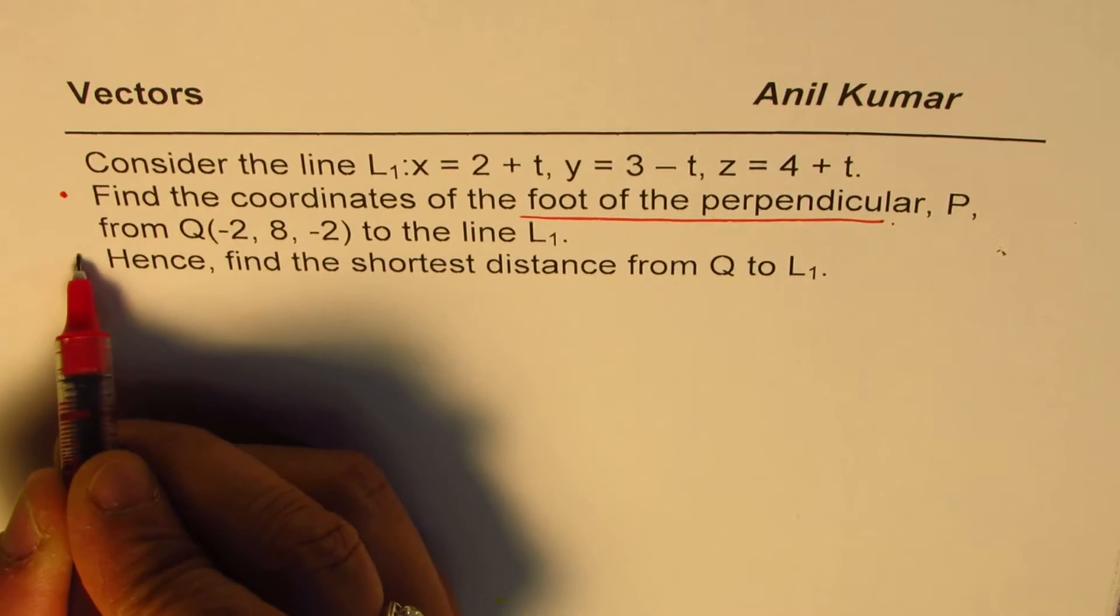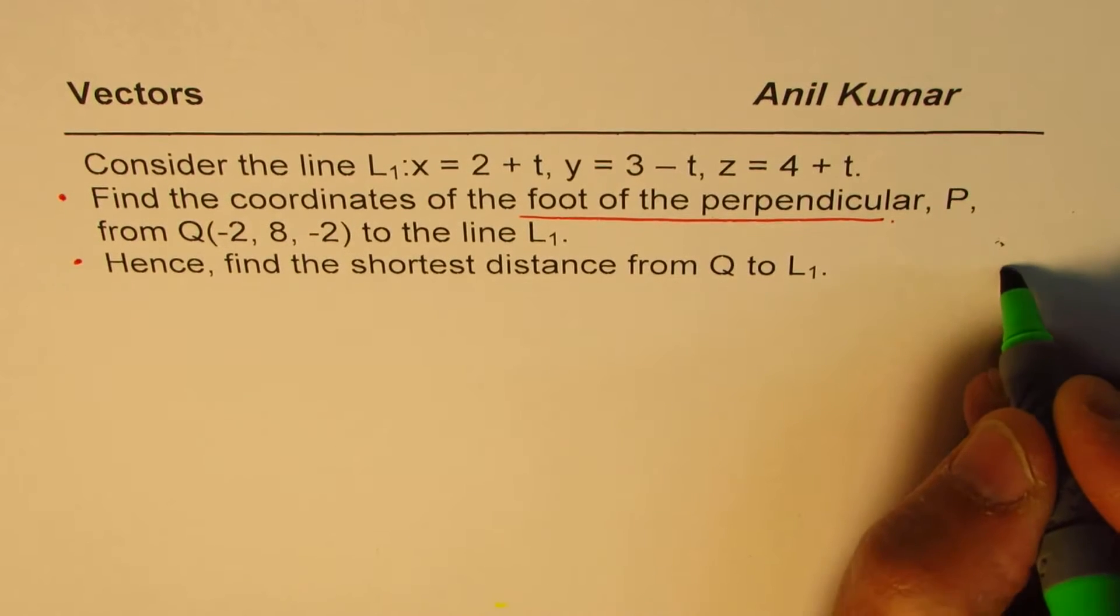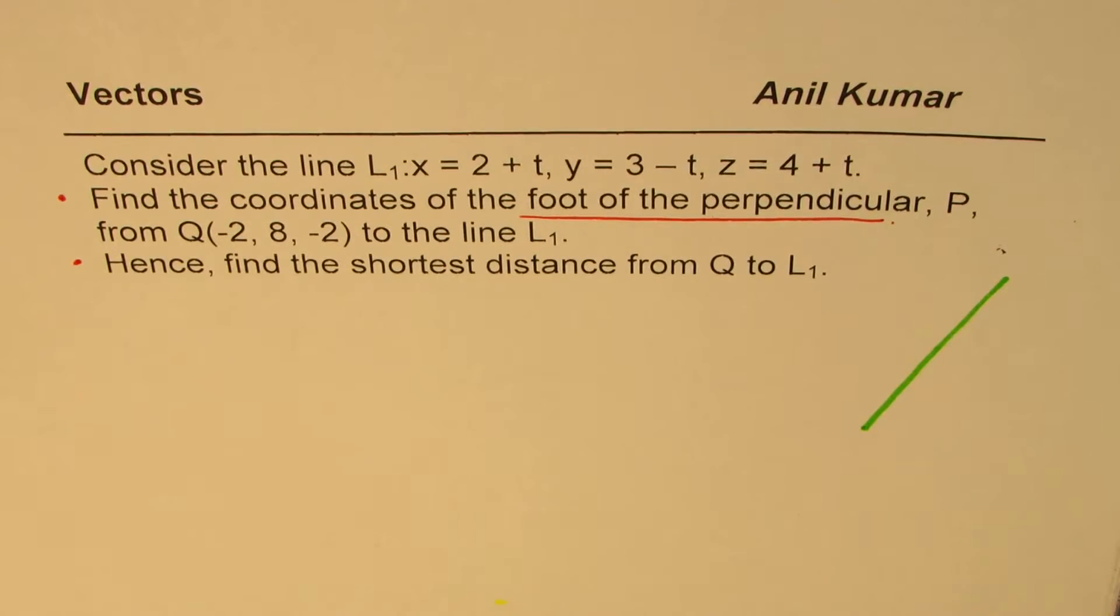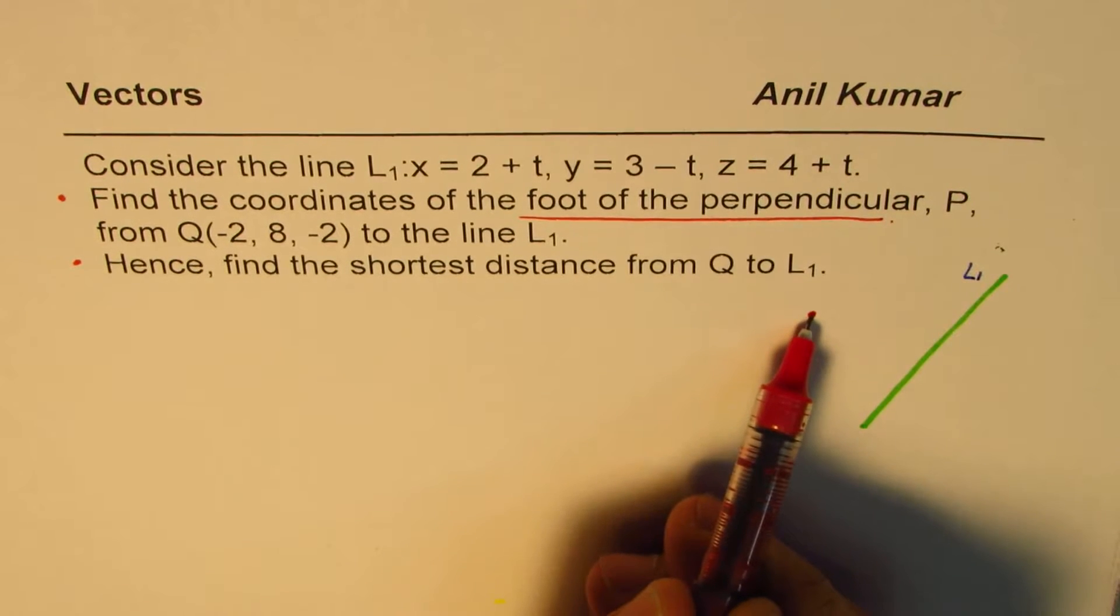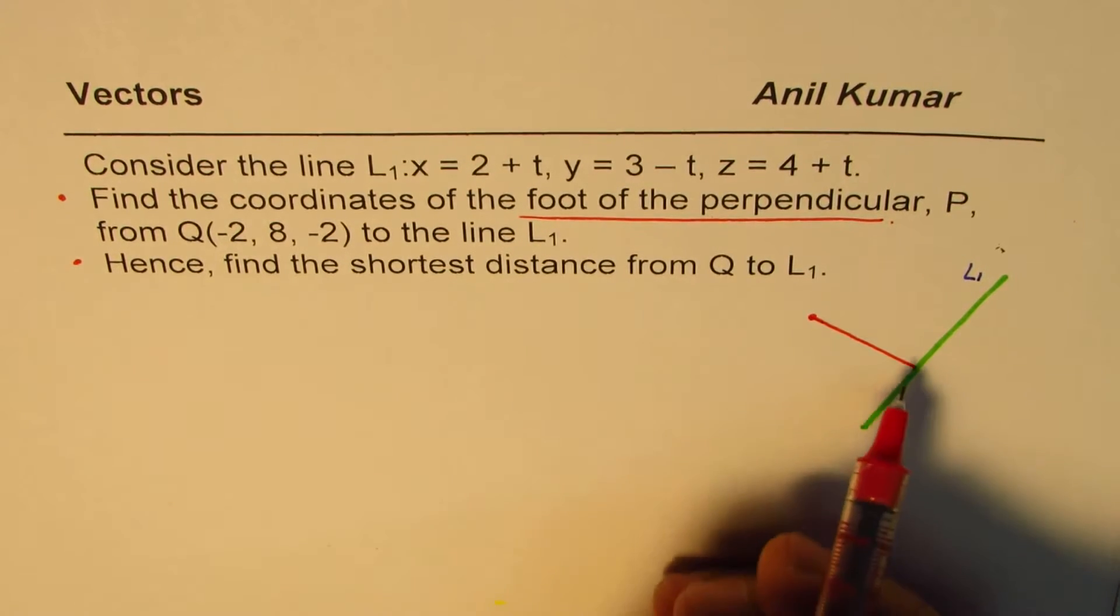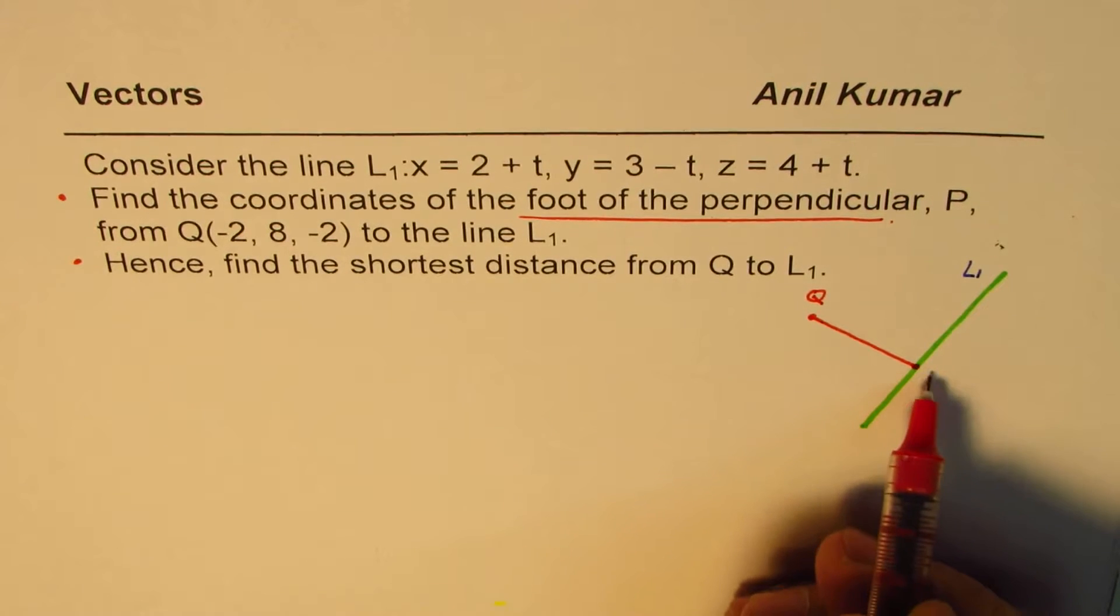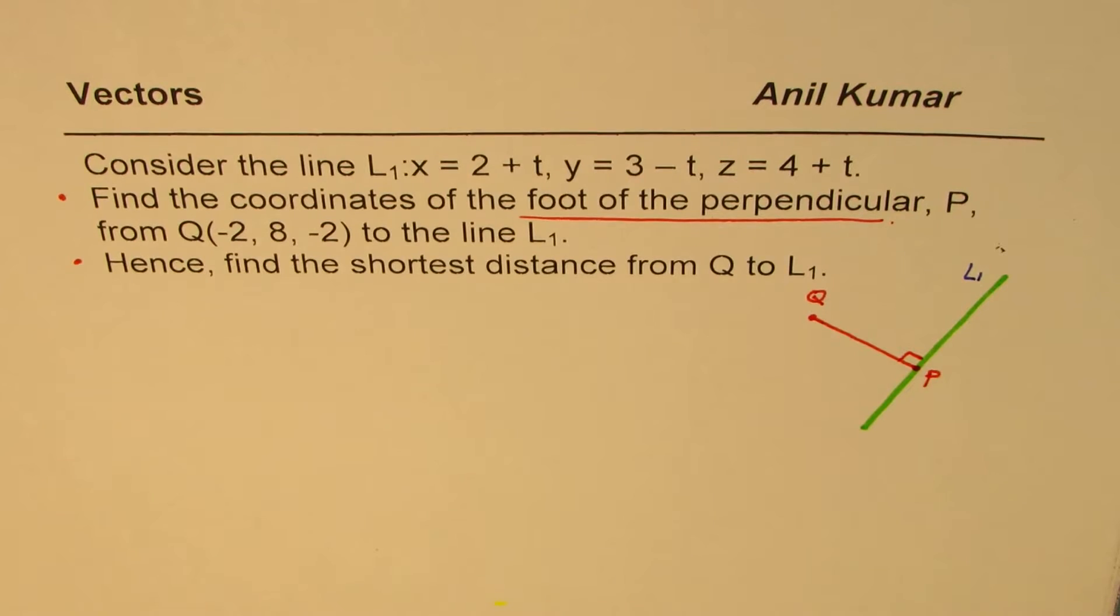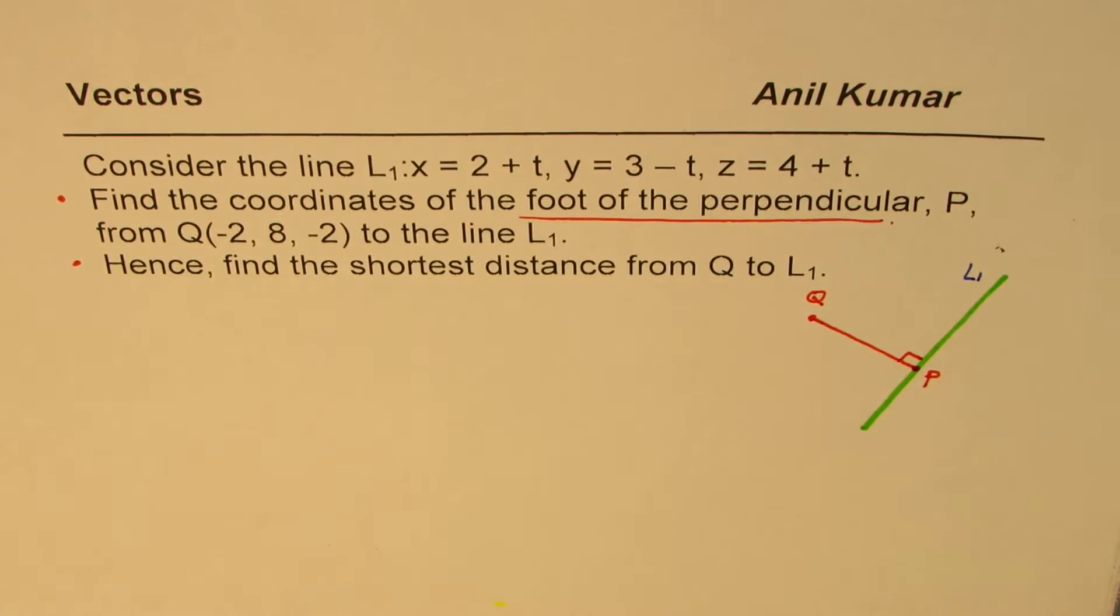So there are two parts to this question. In the first part, we need to find foot of perpendicular. Let's say this is one of the lines, which we are saying is L1 for us. We are given some point outside this line, let's say the point is Q. Foot of the perpendicular means shortest distance we can find. So this is external point Q, and it meets this line at P so that the line and the segment QP are at right angles. That's the whole idea. We need to find the coordinates of point P. Now you can pause the video and then look into my suggestions.